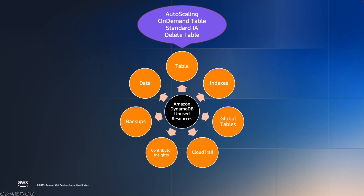But with this, you will still incur the storage cost. What you can do is leverage the standard IA table class to archive this on the DynamoDB end. And if the table is no longer required, you can take a backup of the table and delete it. To backup the table, you can use the DynamoDB API or you can use AWS Backup to leverage cold storage tiering, or you can export it to S3 to use S3 storage classes to further reduce the cost.